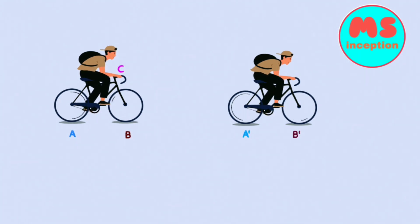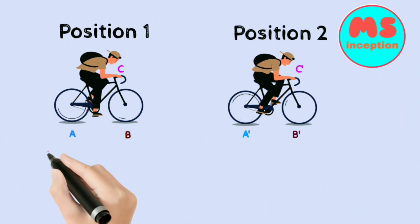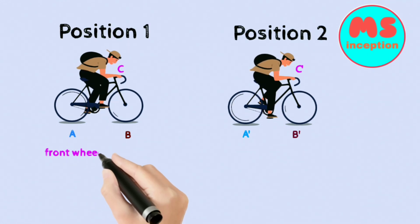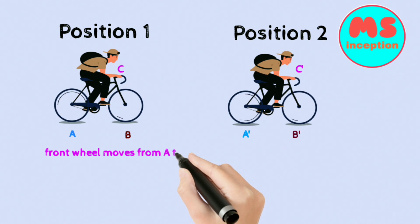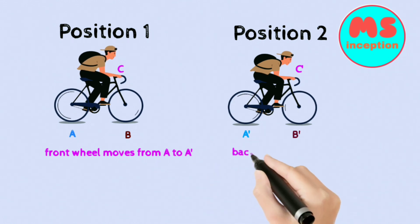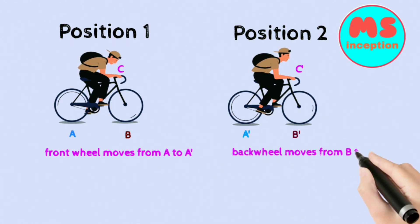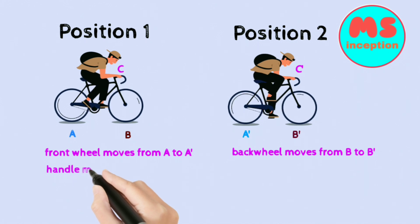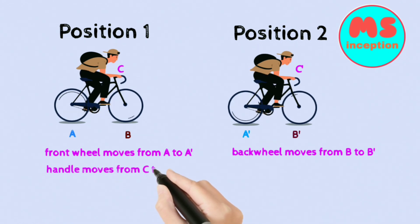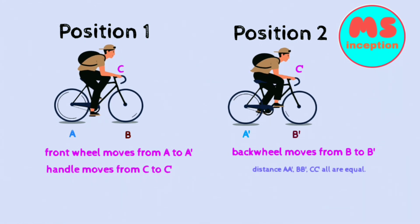A bicycle is moving from position 1 to position 2. All the parts of the bicycle move an equal distance. The distances AA', BB', and CC' are all equal when measured. This is translatory motion.